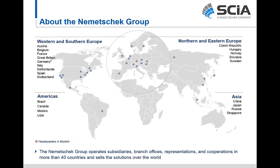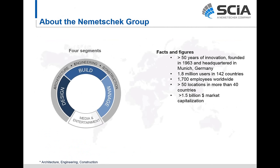Nemetschek is more specifically prominent in the EMEA region — Europe, Middle East, and Africa. We have offices all over the world and develop a large portfolio of software for the architecture, engineering, and construction industries. We've been in business for 50 years, have over 1.8 million users in 42 countries, 1,700 employees worldwide, and more than 50 locations in 40 different countries, really focusing mainly on the AEC market.